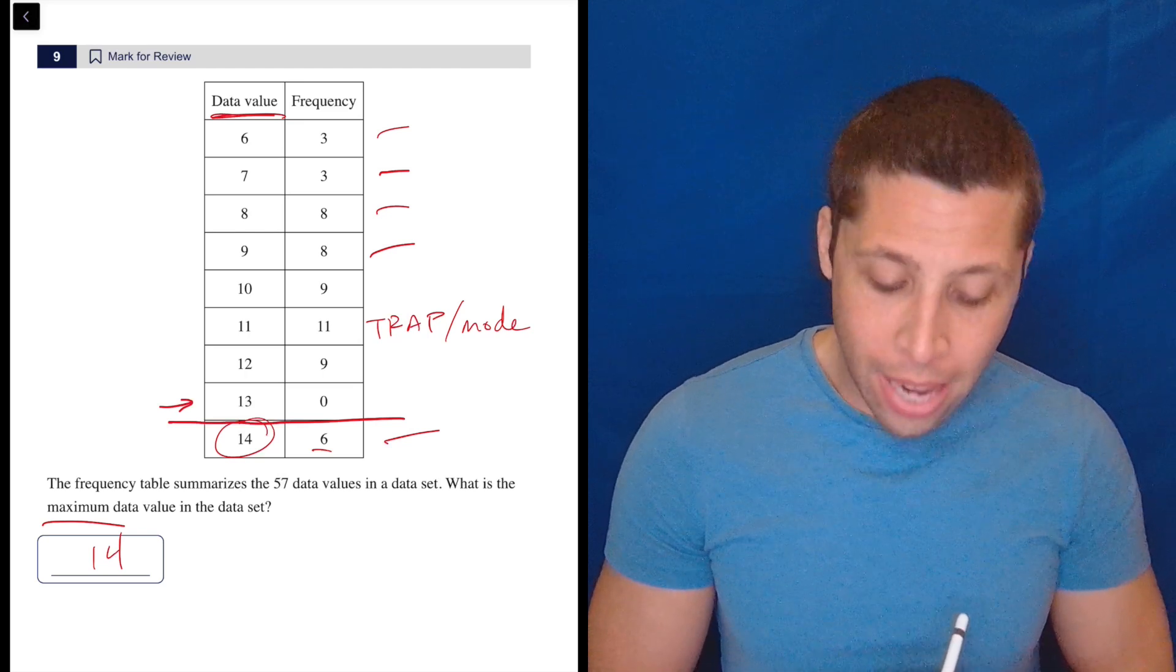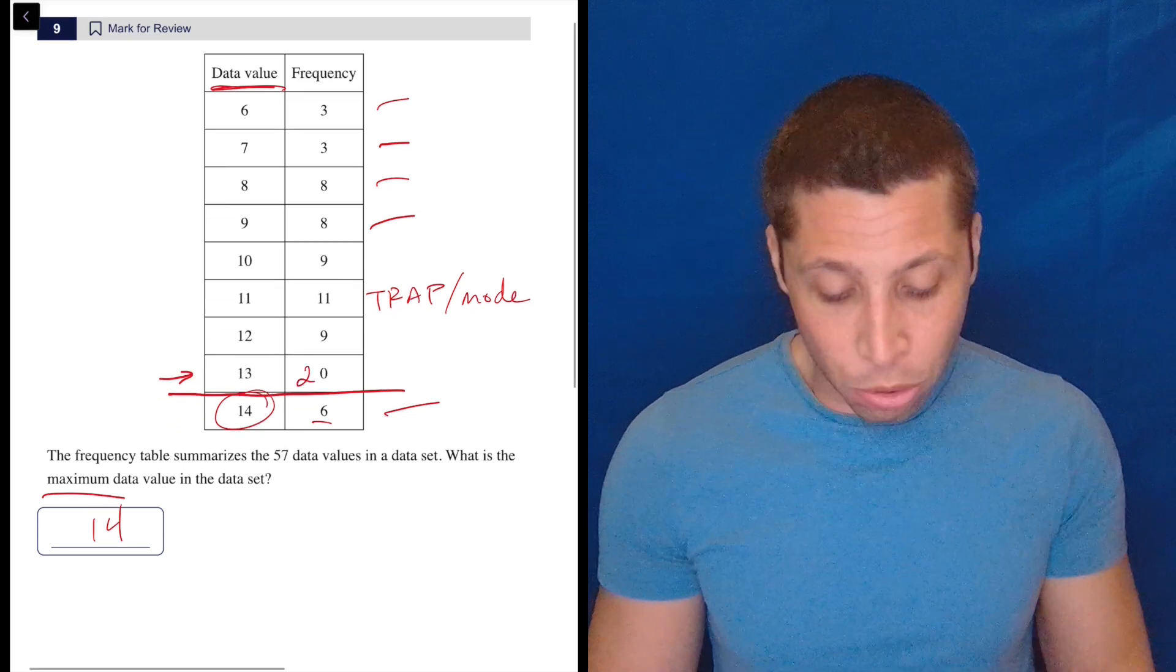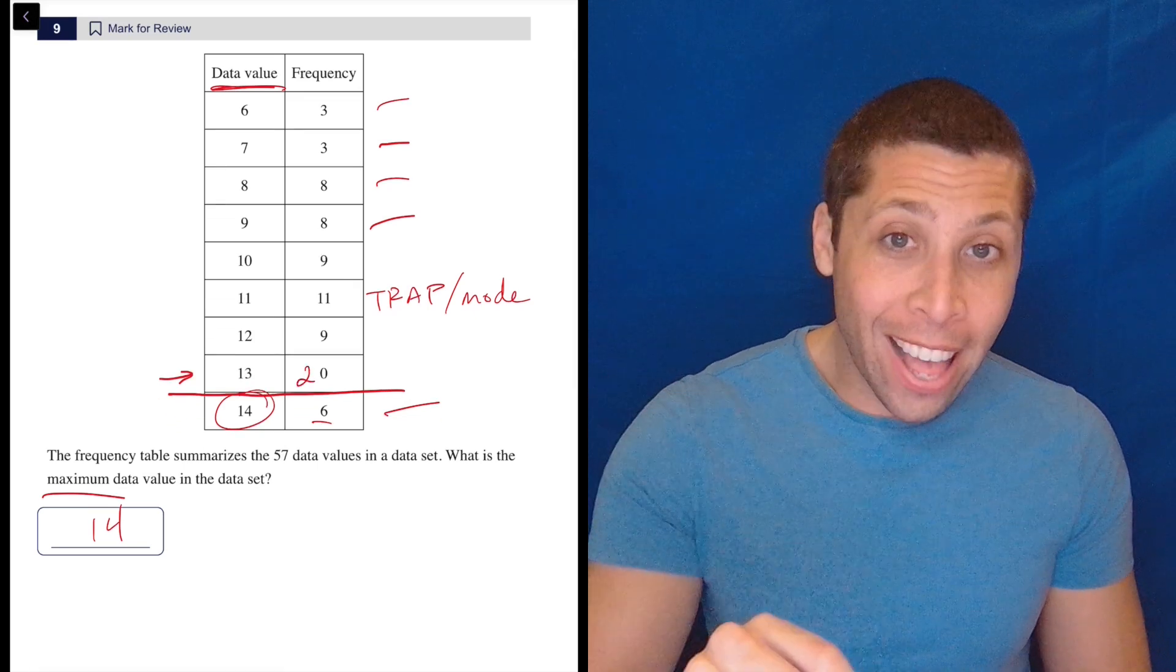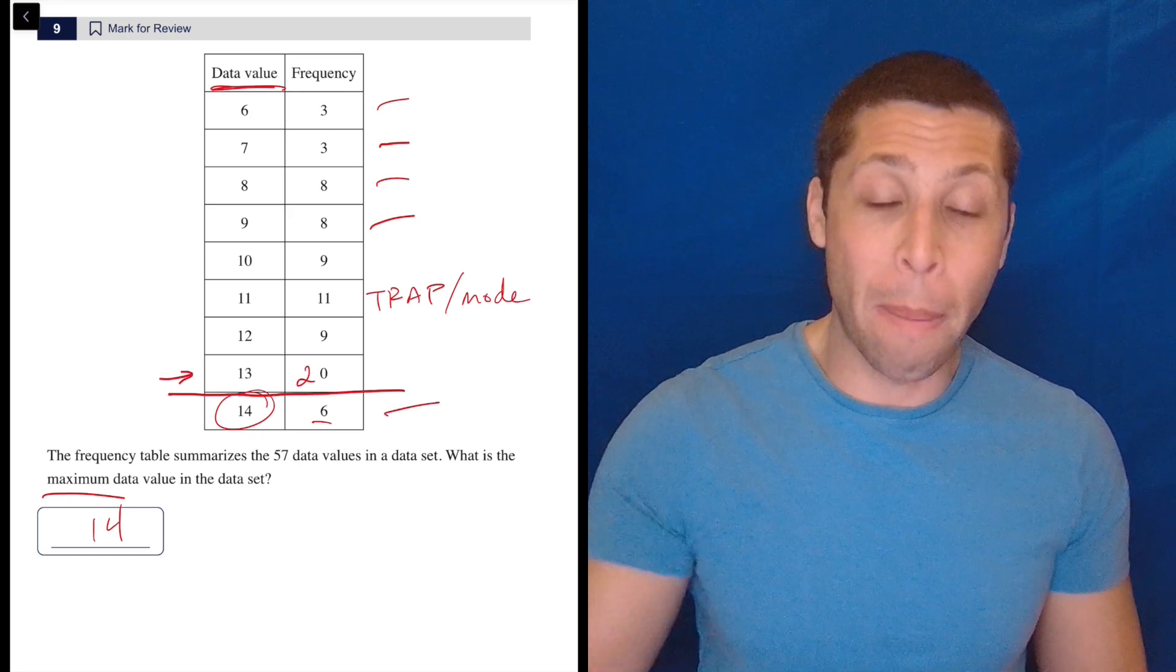So yeah, just to throw in one more potential trap they didn't do, but what if instead of zero, this was 20, right? Then people are going to think that 13 is the maximum because that's the most common number.